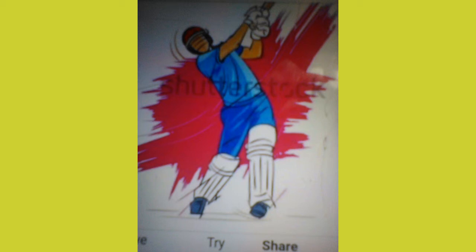9. Bowled: it is a way of getting out where the batsman misses the ball and the stumps are disturbed.